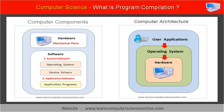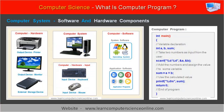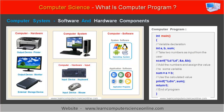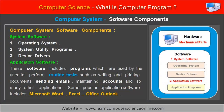Let us now understand the types of computer programs. As per the computer system architecture, the computer programs can be broadly grouped into two categories: first, the system programs, and second, the application programs. The system software components are designed to operate, control, and extend the processing capabilities of the computer system and other hardware devices.